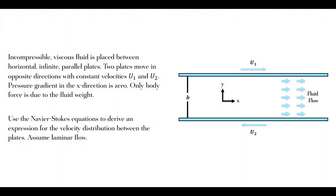That's saying that Gy is the body force. Gx is zero — that's the trick to this one. They want you to use the Navier-Stokes equations to derive an expression for the velocity distribution between the two plates, and the flow is laminar. Easy money. Let's get started.